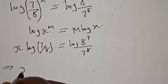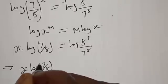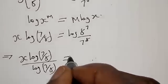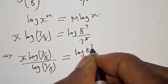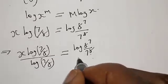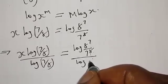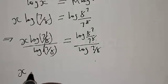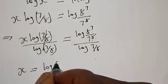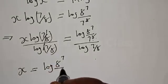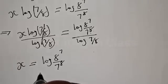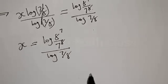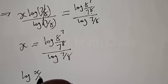Therefore, the whole of this can be written as x times log of 7 over 8 is equal to log of 8 raised to power 7 over 7 raised to power 8. Then let's divide both sides by log 7 raised to power 8. We have x times log 7 raised to power 8 over log 7 raised to power 8 is equal to log 8 raised to power 7 over log 7 raised to power 8.